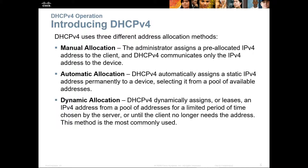With automatic allocation, DHCP automatically assigns a static IPv4 address permanently to a device, selecting it from a pool of addresses — no reservations, just a permanently assigned address. Then there's dynamic allocation, which dynamically assigns, or leases, an address from a pool for a specific amount of time — normally seven days. I'm going to give you an address for seven days; after that I may take it back and reassign it, or I may not.